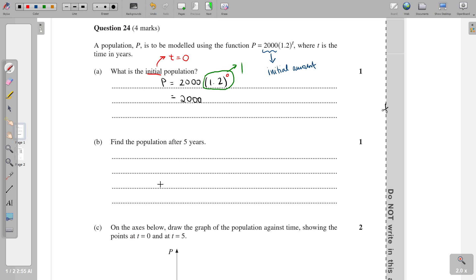So for the population after five years, all we have to do is just substitute five into t. So our population will be 2000 times 1.2 to the power of five. And if we quickly calculate that, what we're going to get is 4977, where I've rounded to the nearest whole number because we're counting how many people there are.